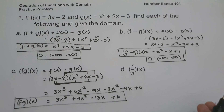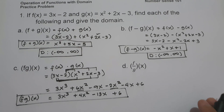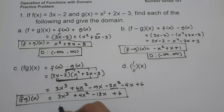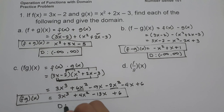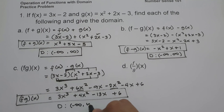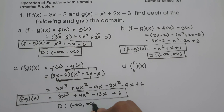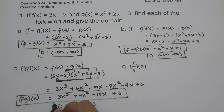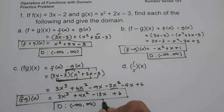To find the domain: since we have a polynomial function, the domain is from negative infinity to positive infinity.